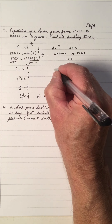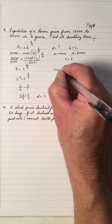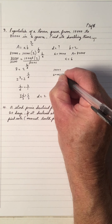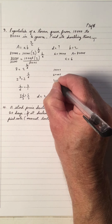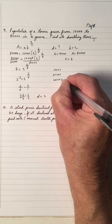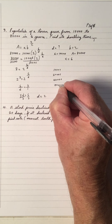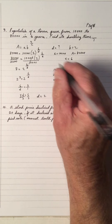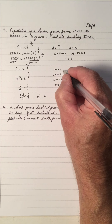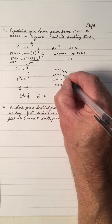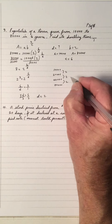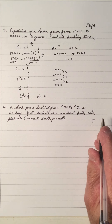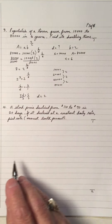The doubling time is every 2 years, which makes sense. Starting at 10,000: double to 20,000 at year 2, double to 40,000 at year 4, double to 80,000 at year 6. That checks out perfectly.